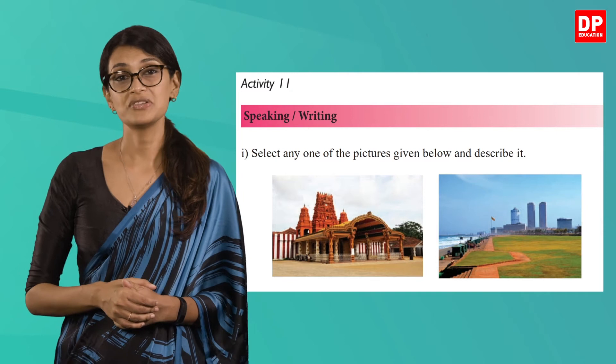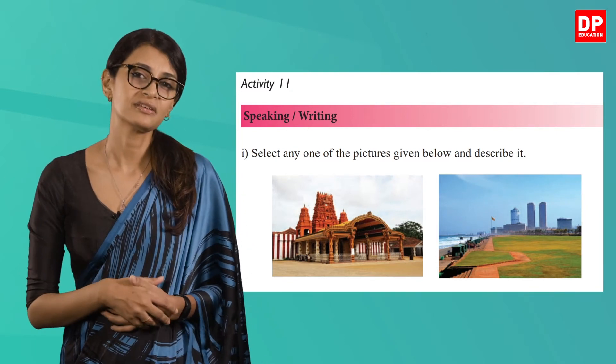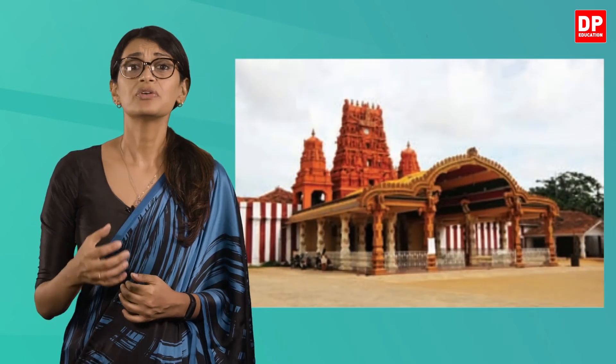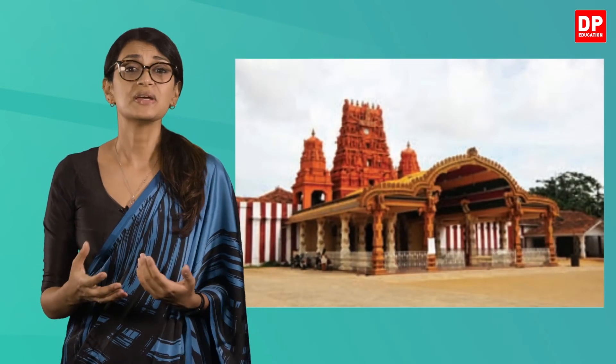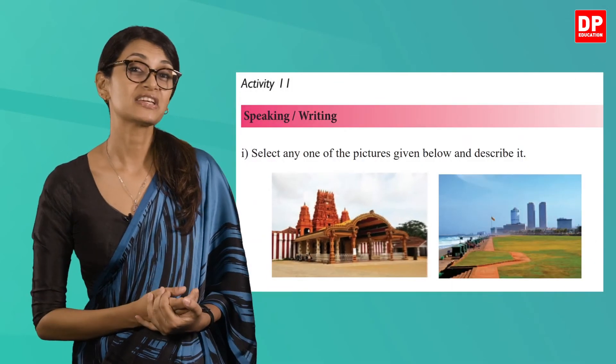In the following activity on page 32, you are asked to describe one of the pictures given. The first picture is of the Nallur Kandaswamy Temple situated in the Northern Province. Nallur was built in the 13th century and served as the capital of the Jaffna kings, and the royal palace was situated close to the temple. I have been fortunate to visit this place once and it is absolutely breathtaking.